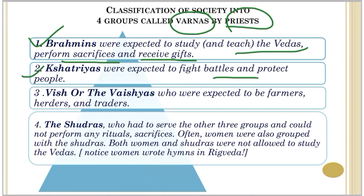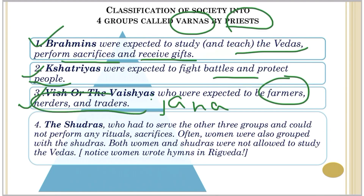Third on the pyramid were the Vaishyas, also called Jan as studied in the previous chapter. They were farmers, herders, and traders - the common people. At the bottom were the fourth category, the Shudras, who served all three groups above them and could not perform any ritual or sacrifice.